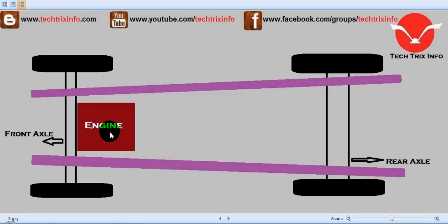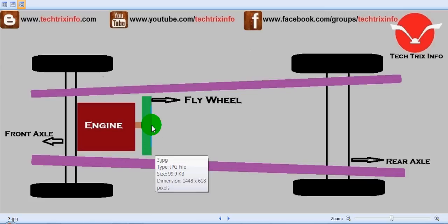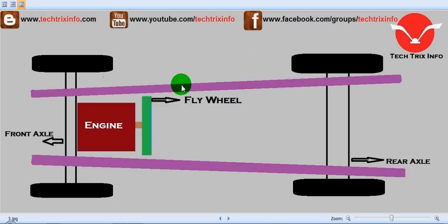Next to the engine we have the flywheel, which is the power takeoff point of the vehicle. Engine power is taken from the flywheel, which rotates at the RPM provided by the engine. Power is then taken away from the flywheel through the clutch.